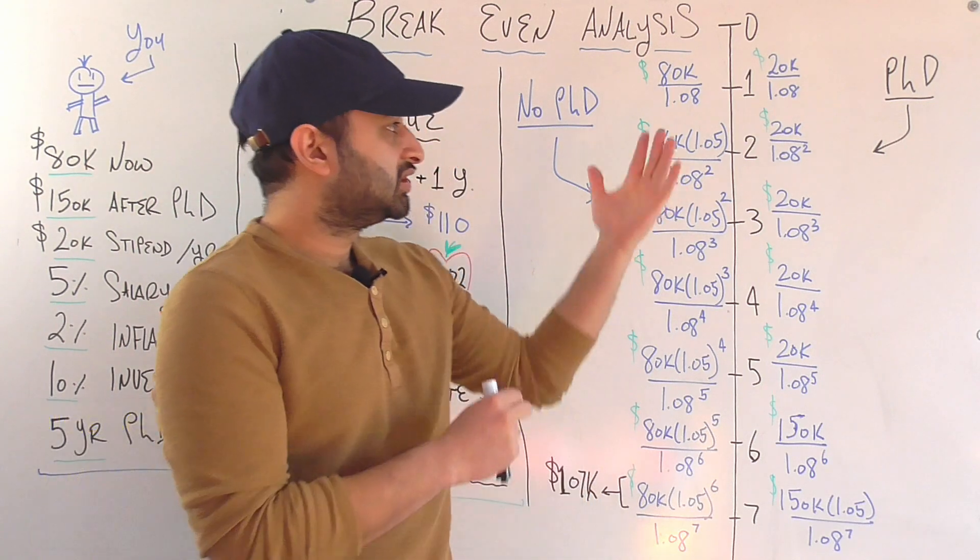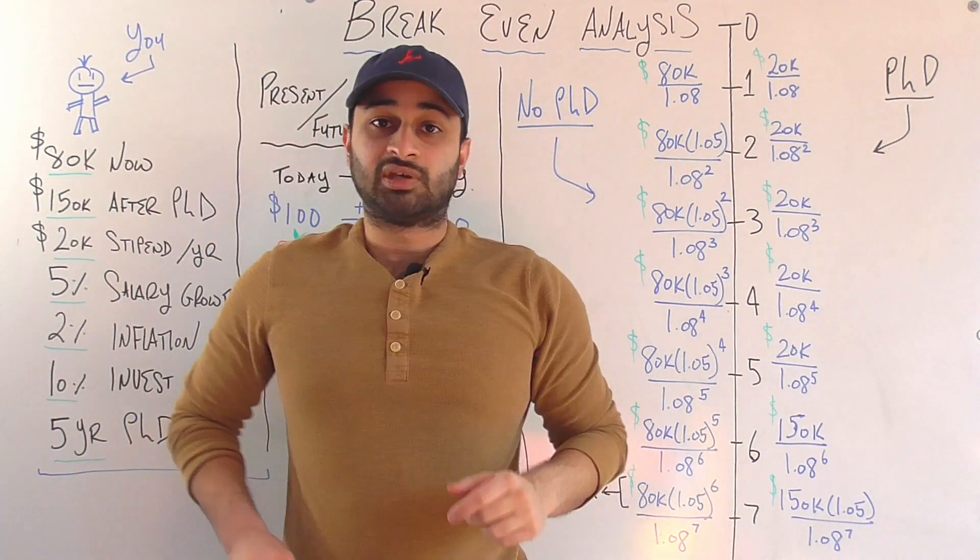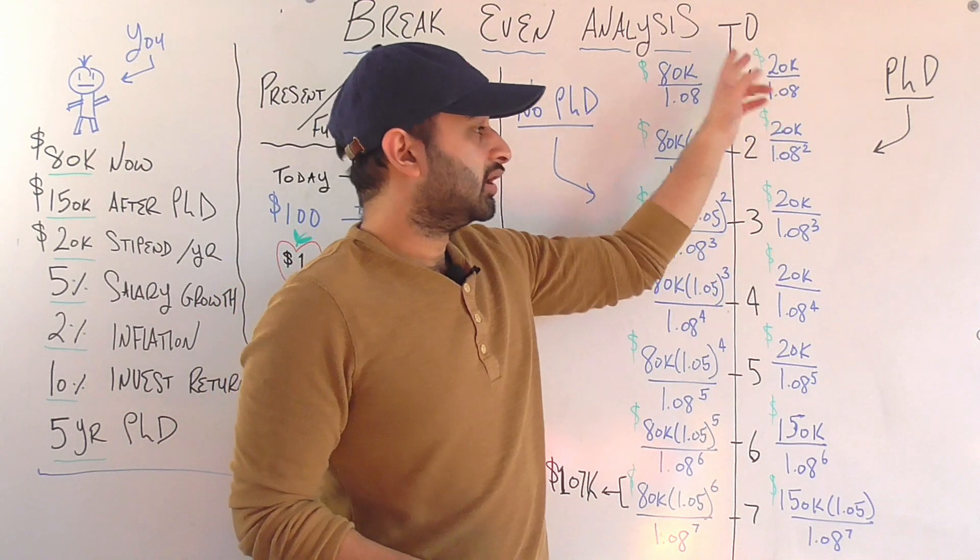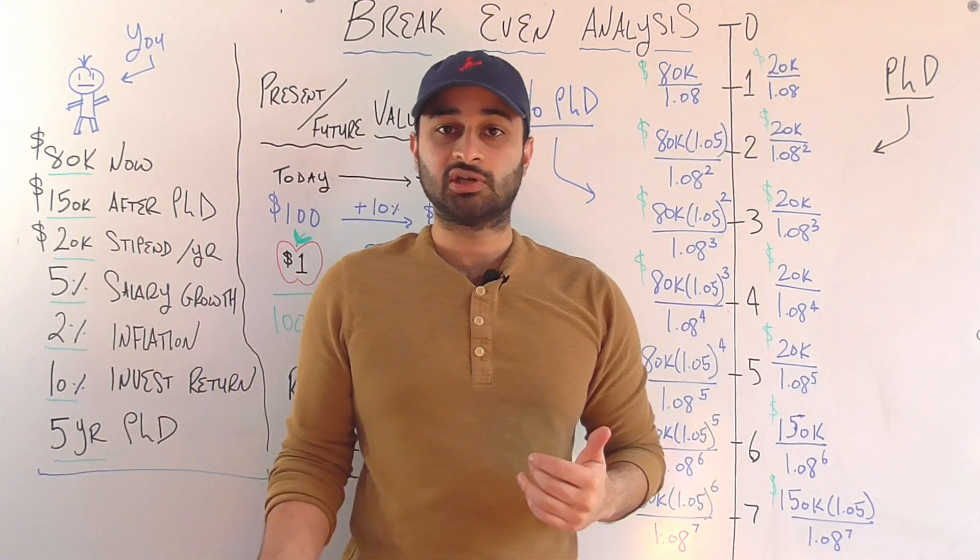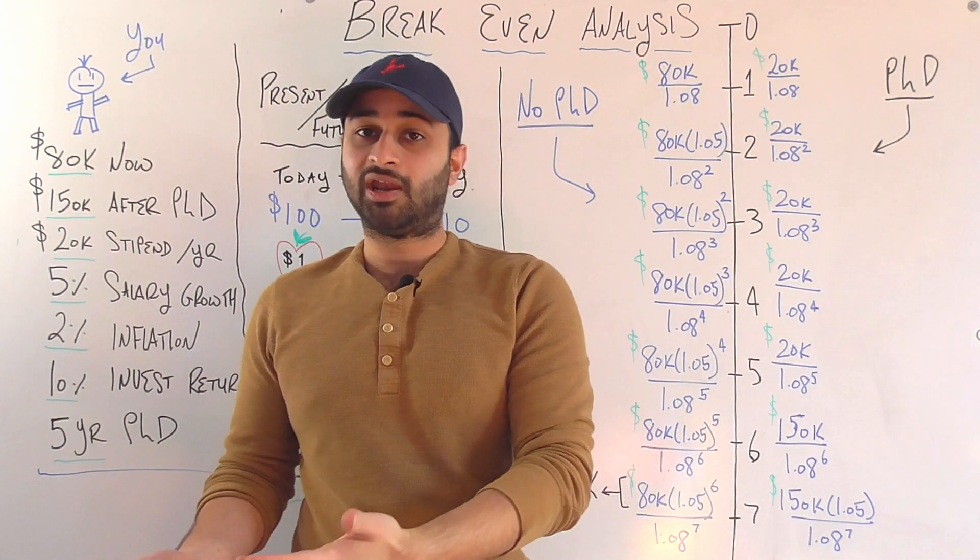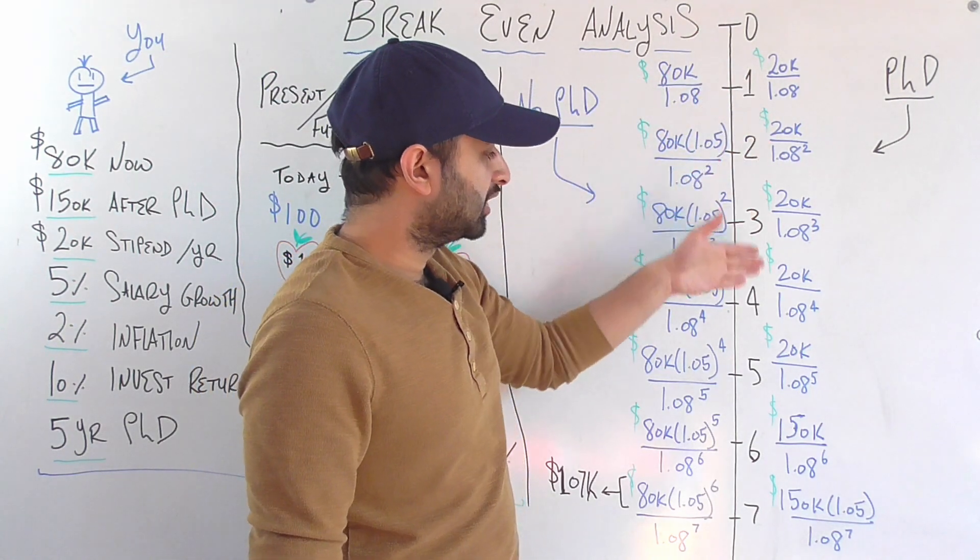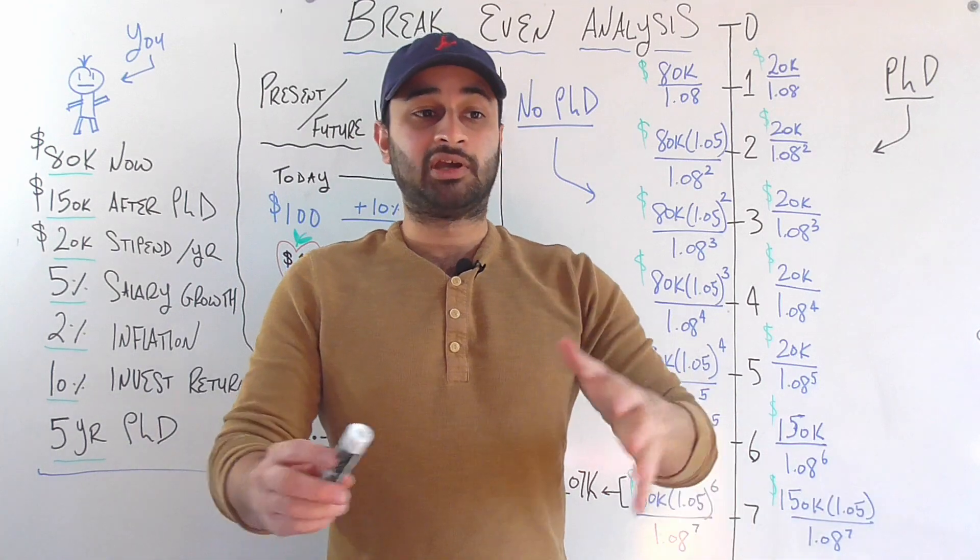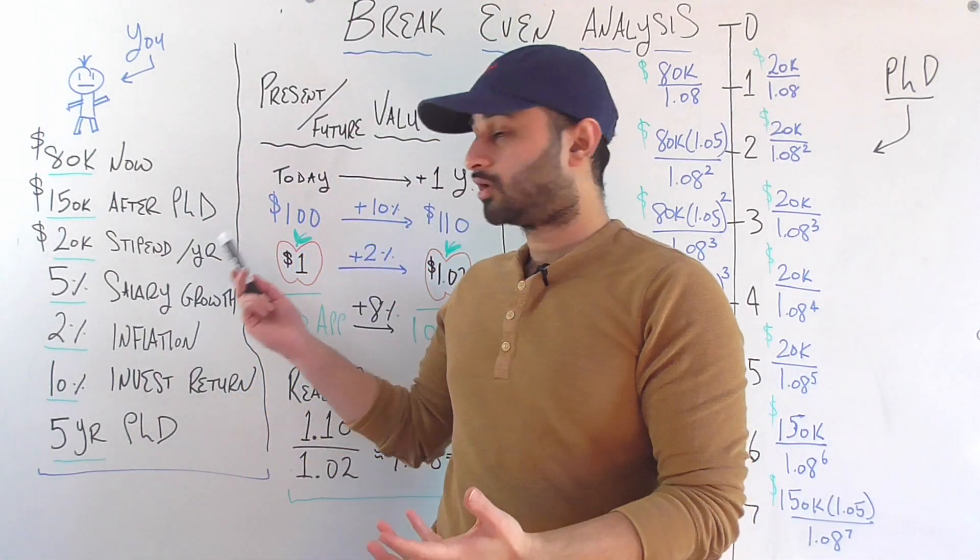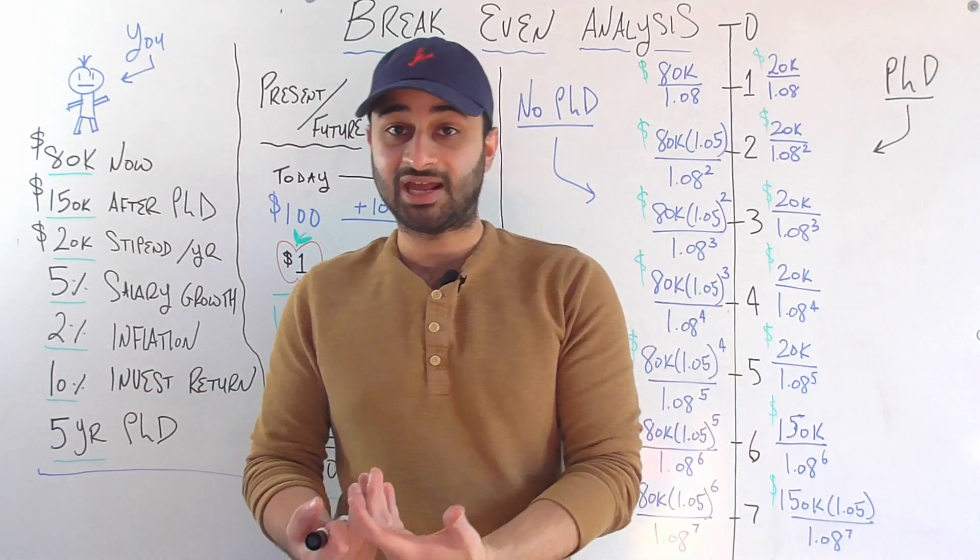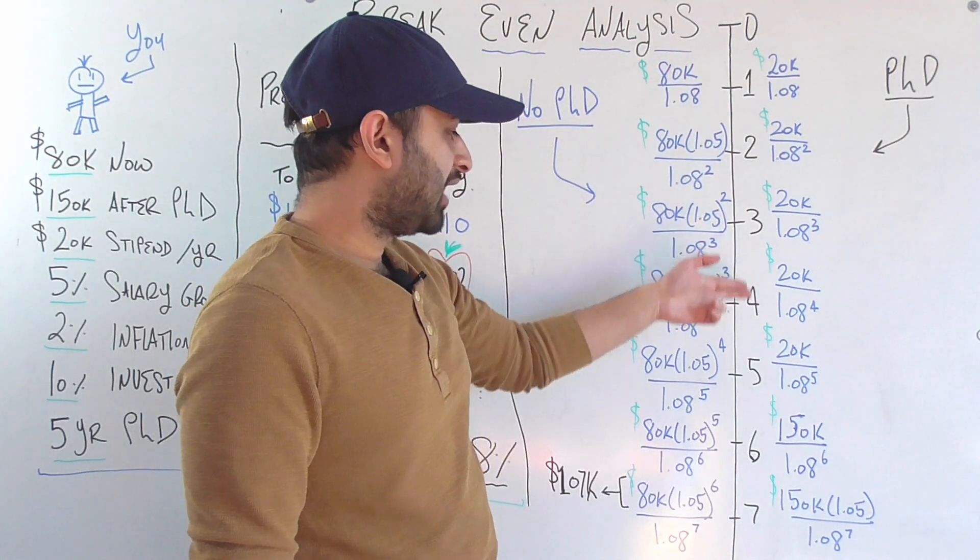We can do the PhD option in a very similar way. So I'm getting a stipend of $20,000 per year, one year after the PhD starts. But we have to divide that by 1.08. So it's going to be 20,000 divided by 1.08. And actually it's the same looking formula for the next five years. Because my stipend, if you remember, is not increasing. We're not getting raises on the stipend. So that's the first five years.